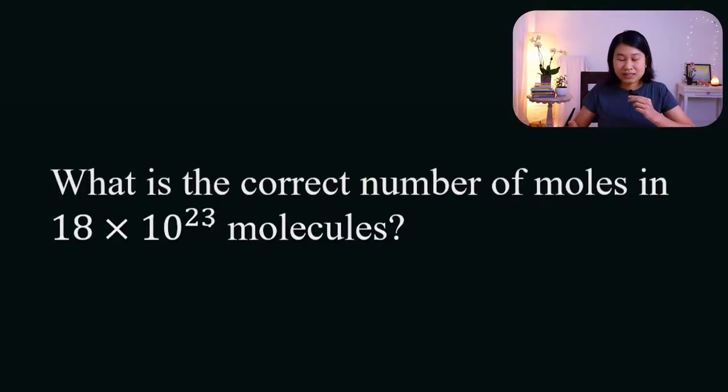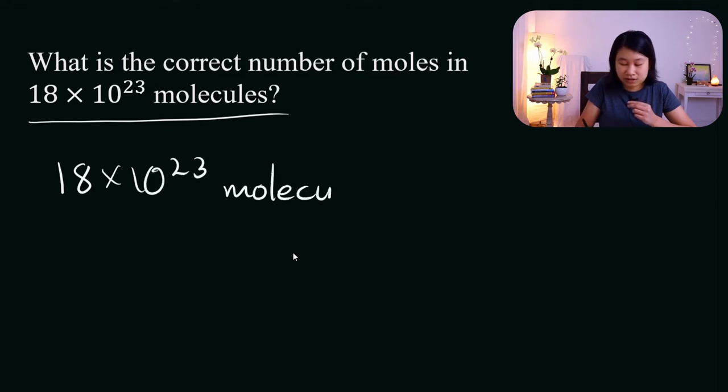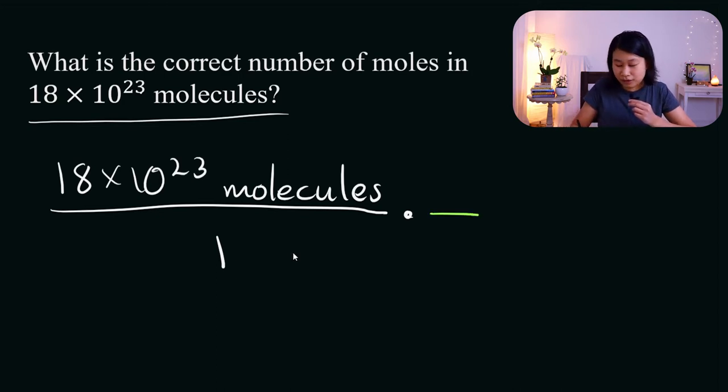What is the correct number of moles in 18 times 10 to the 23 molecules? For method number two, I start with what I'm given. So I am given 18 times 10 to the 23 molecules. And in this case, I'm going to want to keep track of what unit this number is for. Now I'm going to put this over 1 because we're using fractions. And this number over 1 is the same thing as if it were written alone, because anything divided by 1 is just itself. Now I'm going to write a new fraction. And this fraction, this green fraction, is going to help me convert from molecules to moles.